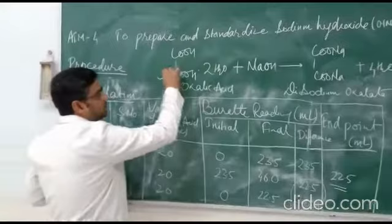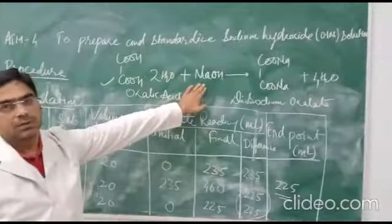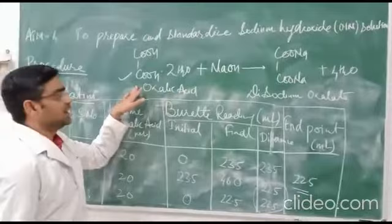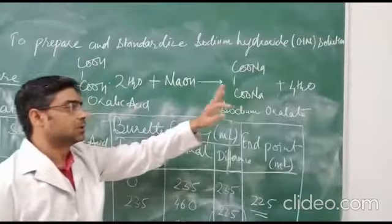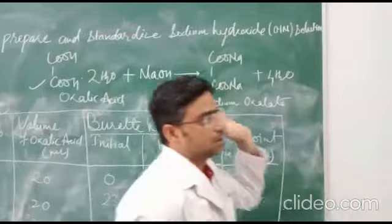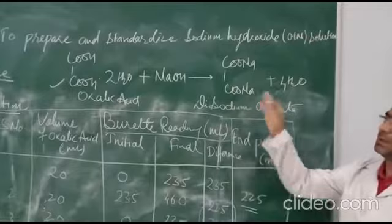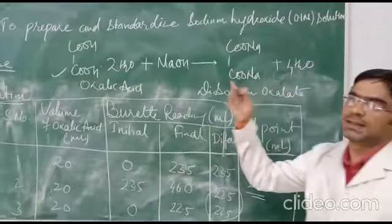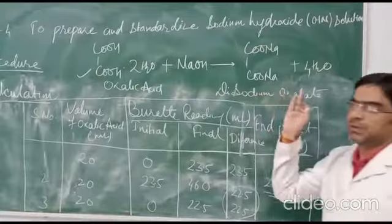We are using oxalic acid as the primary standard and titrating with sodium hydroxide. The reaction involves a strong base reacting with a weak acid — oxalic acid — forming sodium oxalate and water. Since the salt formed is from a strong base and weak acid, the endpoint falls on the basic side. That is why phenolphthalein is selected as the indicator, as its range is 8.3 to 10. The sodium hydroxide is the titrant, so the endpoint automatically goes toward the basic side, confirming that phenolphthalein is the appropriate indicator.